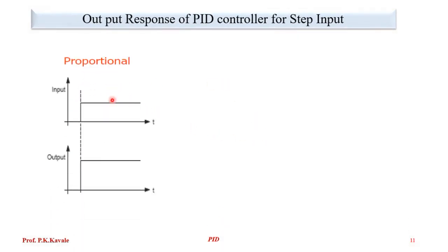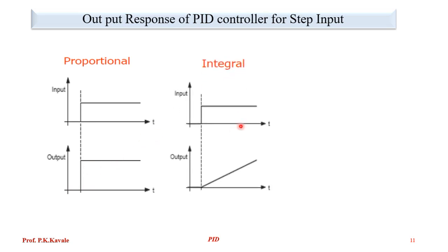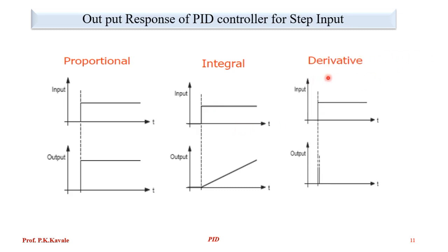For a proportional controller, the input is the error — specifically a step input. The output is proportional to the error. For the integral controller, over a period of time it accumulates the past error value — this is the integral output to the error value. For the derivative controller, it is the rate of change of error. As soon as there is a step response that becomes constant, the derivative output only acts during the changing region; after that there is no response, because the error is constant with no change.